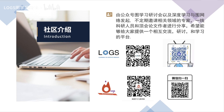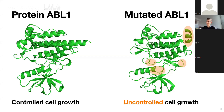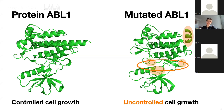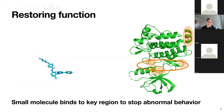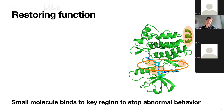Biologists have identified that a particular region of the protein is especially important for abnormal behavior. Furthermore, if a small molecule swimming around in our bodies attaches to this particular region when it comes close to the protein, then the abnormal behavior is stopped and the usual function of the protein can be restored.